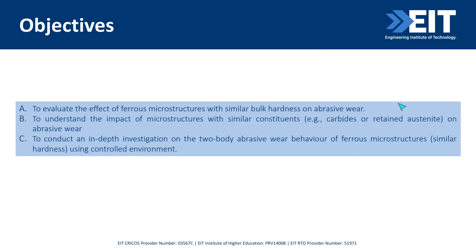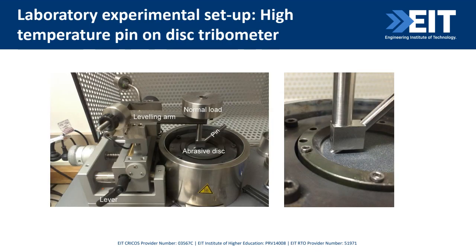Once we identified the best microstructure from those four, the second objective was to change the individual constituents within it — for example, the bainitic ferrite and retained austenite within bainite — to see how they affect abrasive behavior. The third objective was to use all four microstructures in a more controlled wear environment using a specialized in-house wear equipment.